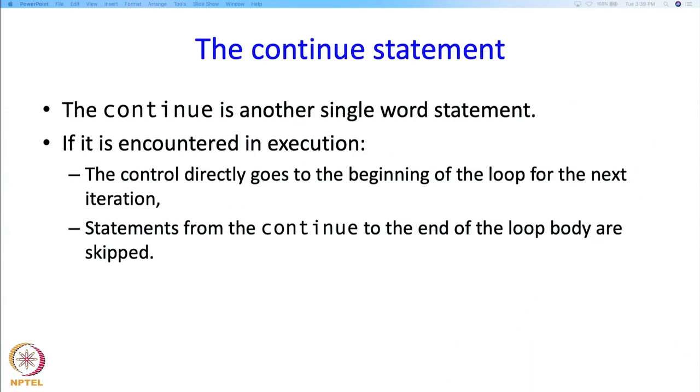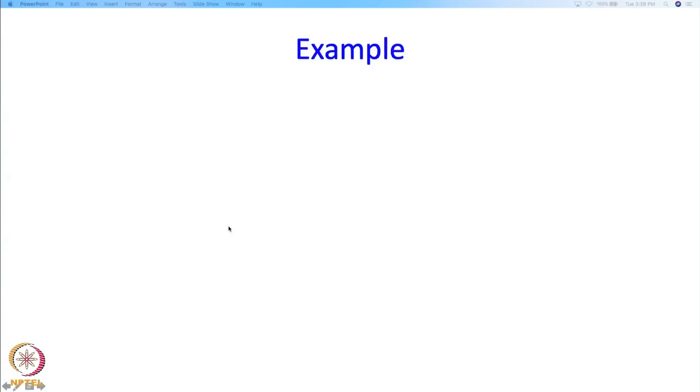So there is another single word statement that I should tell you about, and this is the continue statement. So if it is encountered in any execution, then the control directly goes to the beginning of the loop for the next iteration. So basically the statements from the continue to the end of the loop body are skipped. Now you might say why you might need such a statement, so here is an example.